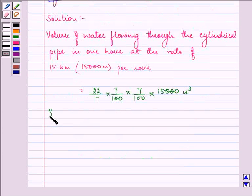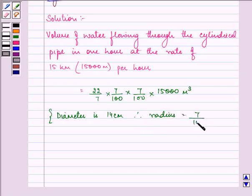This is because since the diameter is 14 cm therefore radius will be 7 upon 100 meter. That is coming out to be 231 meter cube.